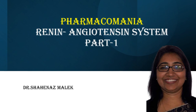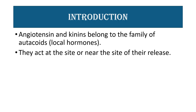Hello and welcome to Pharmacomania. I am Dr. Srinas Malek and we are going to discuss renin angiotensin system part 1. Angiotensin and kinin belong to the family of autacoids. Autacoid means local hormone. They are produced in the tissue or endothelium and after being released, they act at the site of release or nearby. So it is called a local hormone.